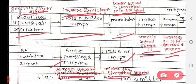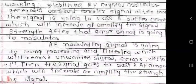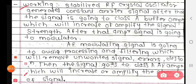So step by step, we will now see the working of the transmitter. First, the stabilized RF crystal oscillator generates the constant carrier signal. After that, the signal goes to the class A buffer amplifier, which increases or amplifies the signal strength.